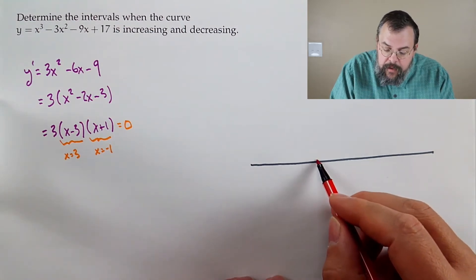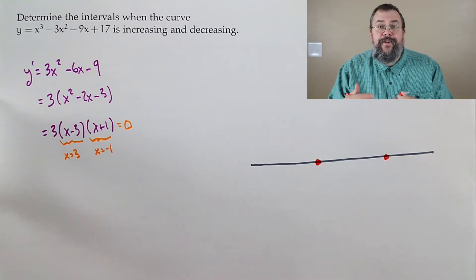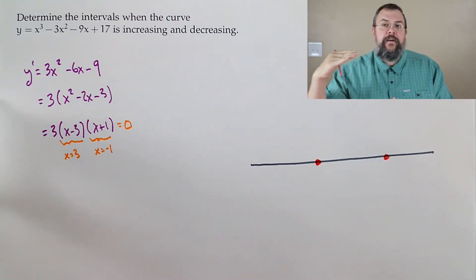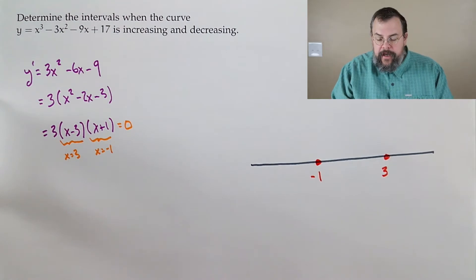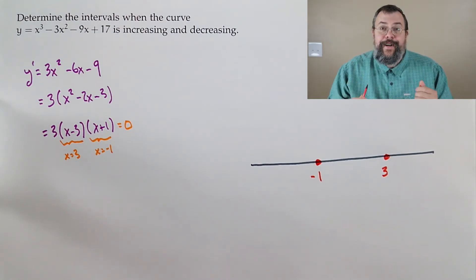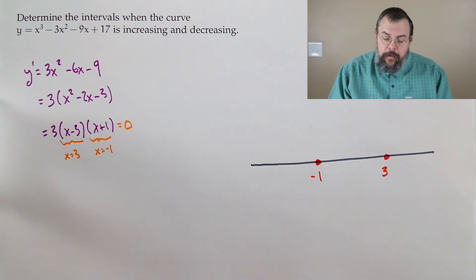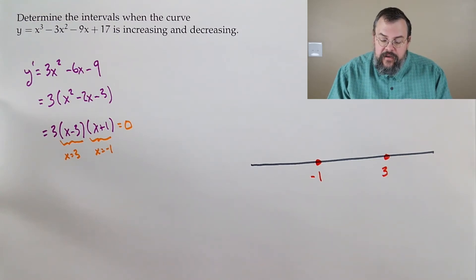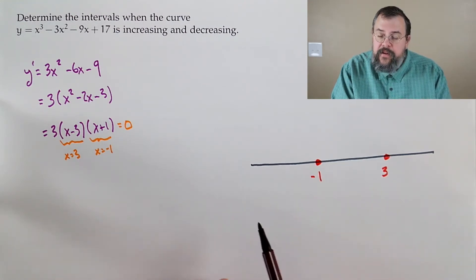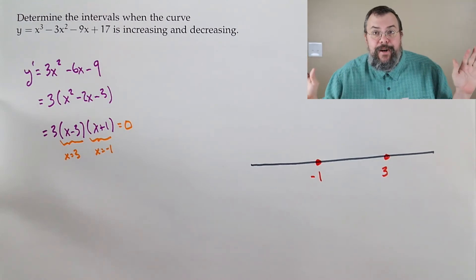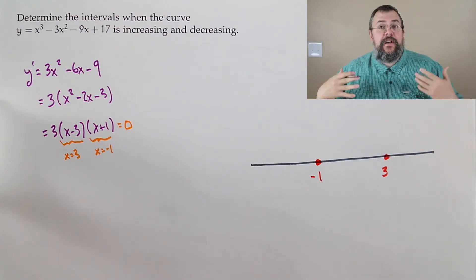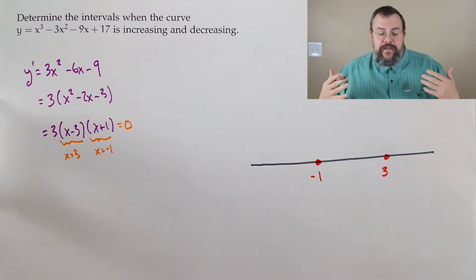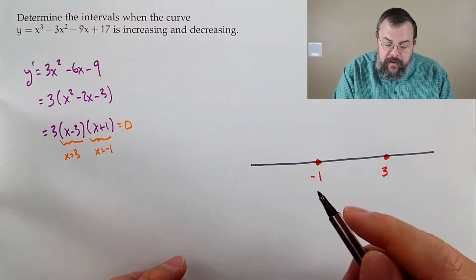We just have to make sure we get our numbers in the right order — we go left to right, negative to positive. So negative 1, then positive 3. What comes next is we test each interval by picking points. For our first interval, all numbers below negative 1, we can pick negative 2. I want to pick numbers which are easy to work with computationally.